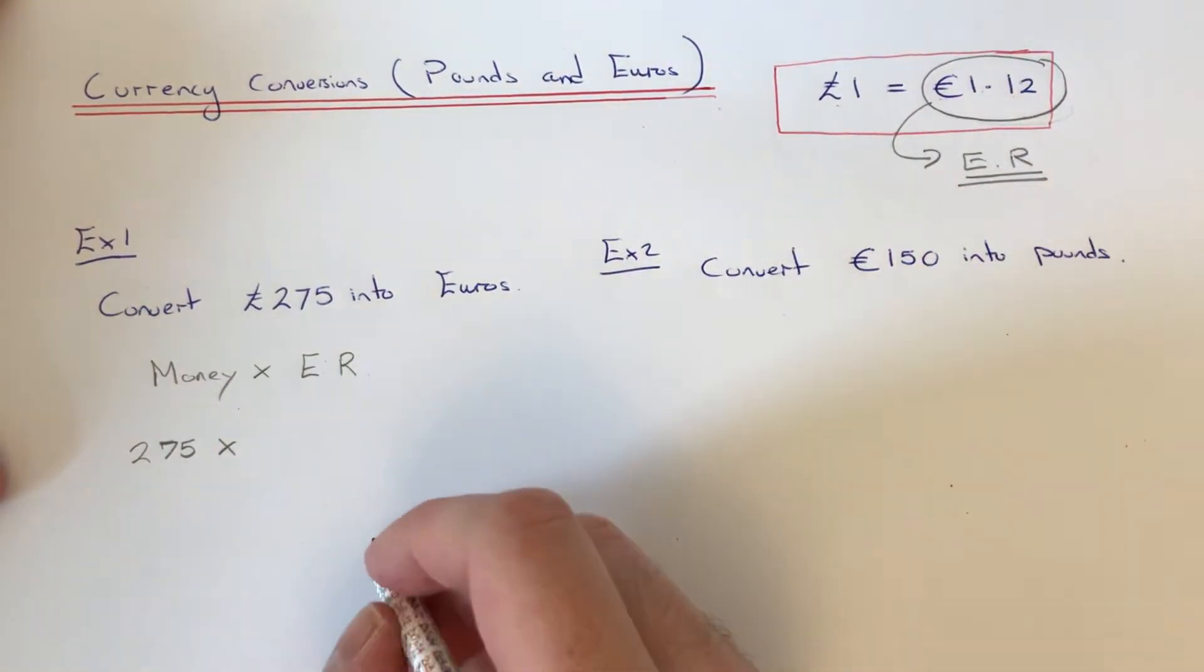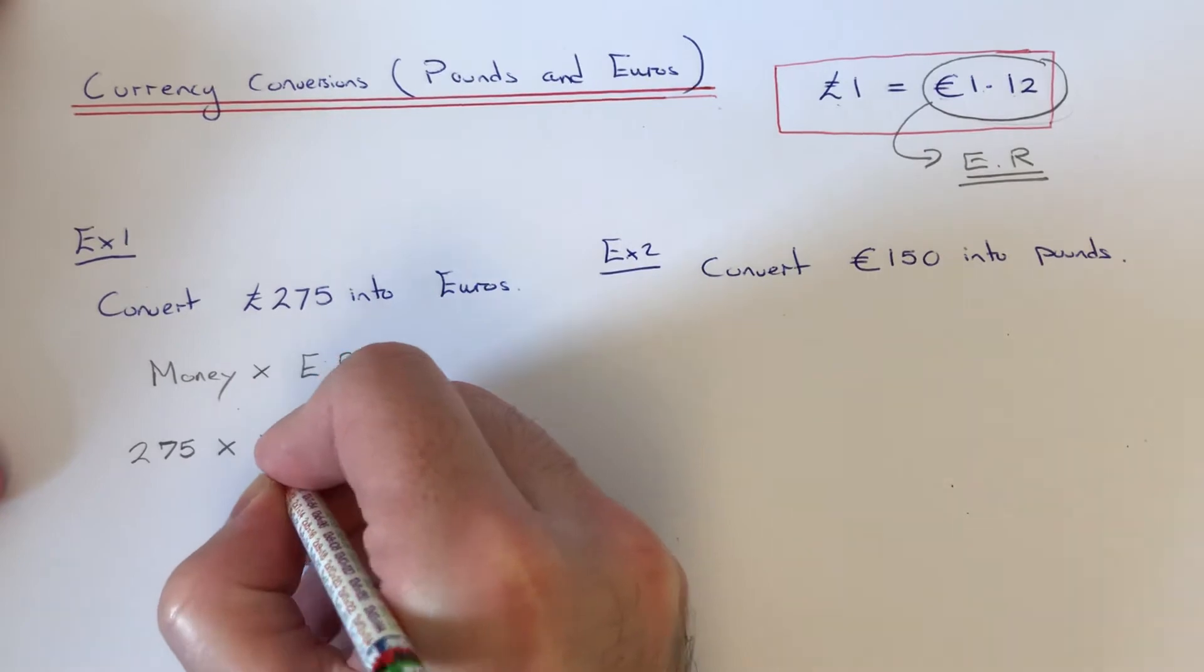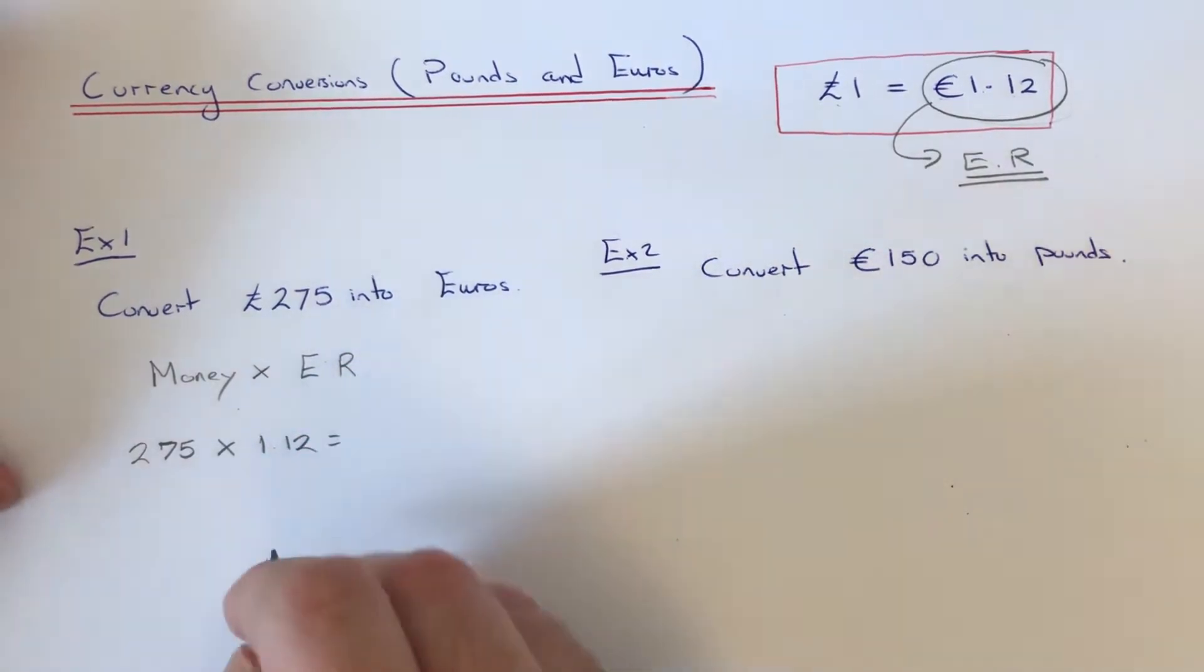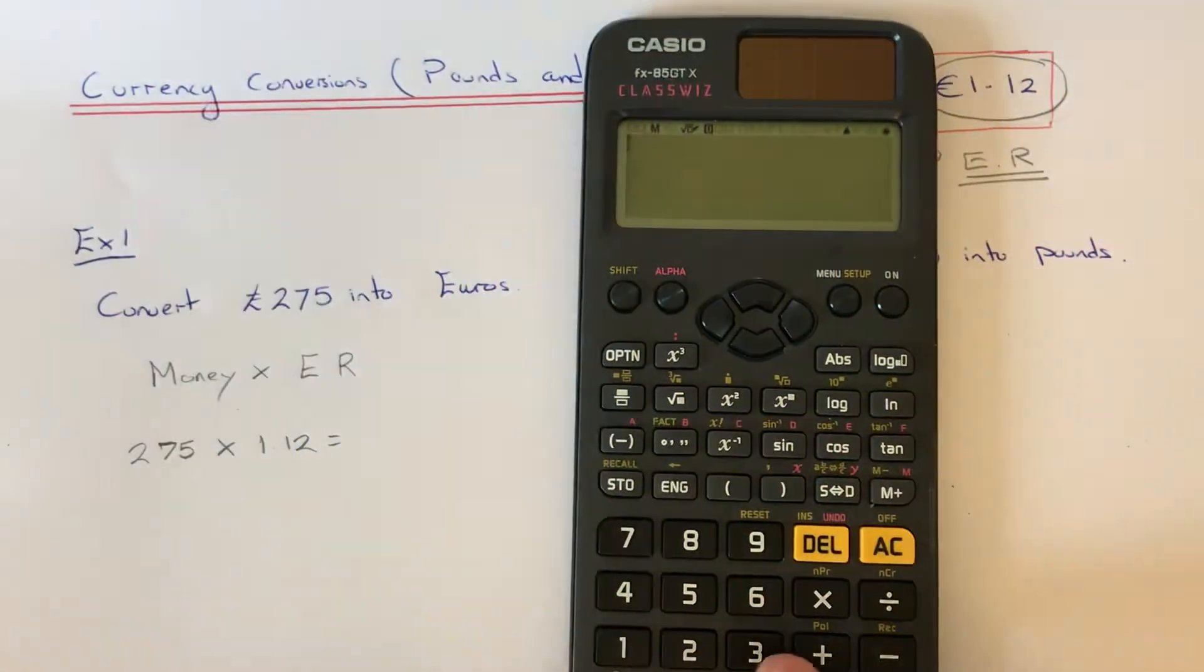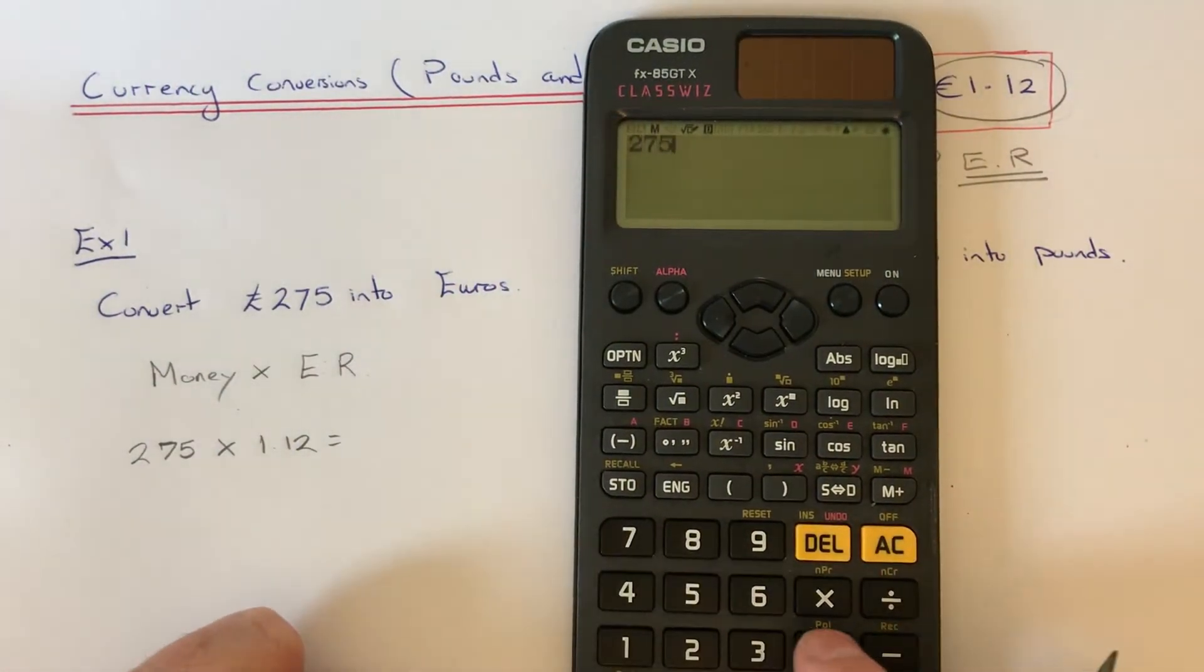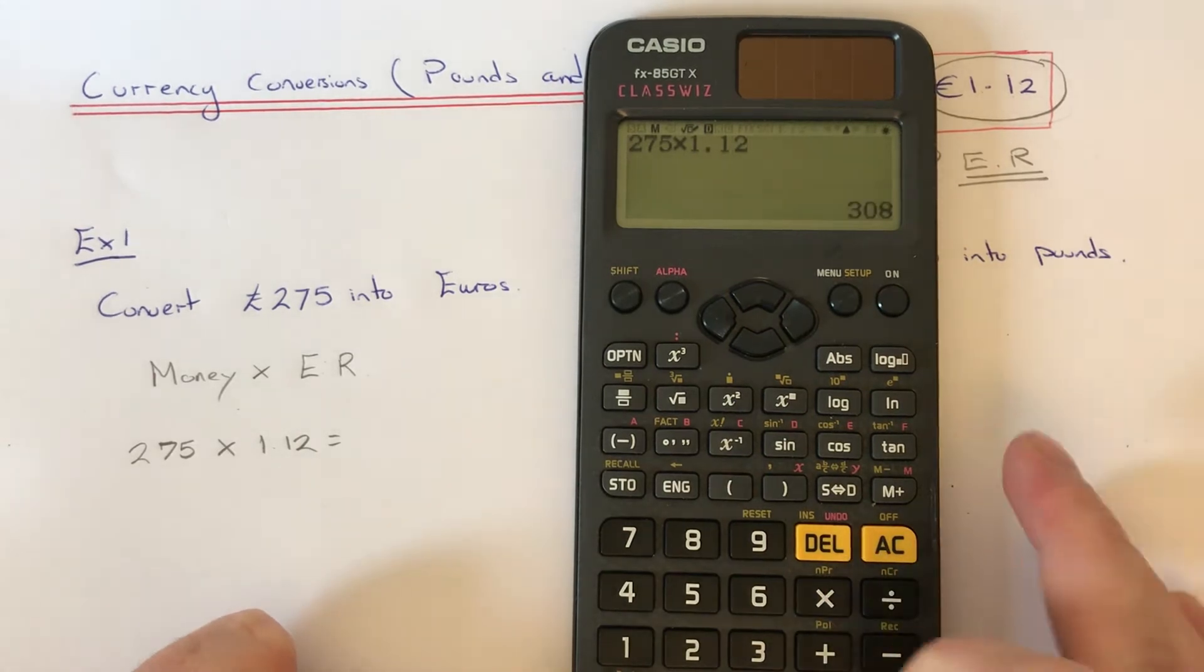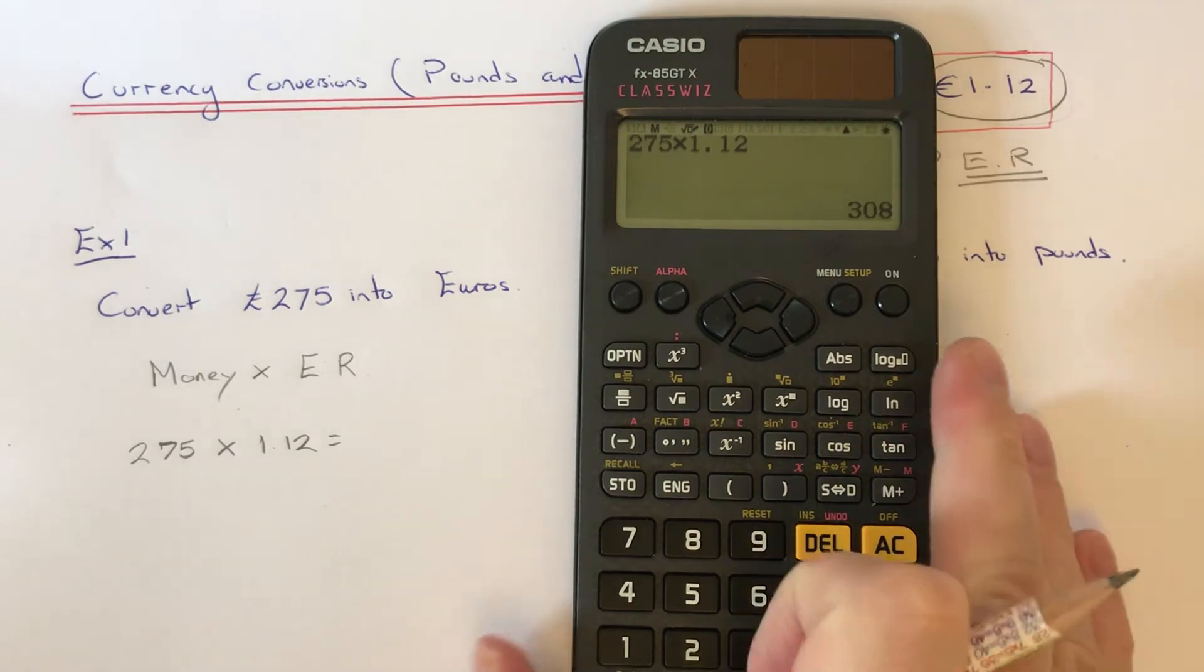If you get your calculator for this one, we do 275 times 1.12 and we get €308.